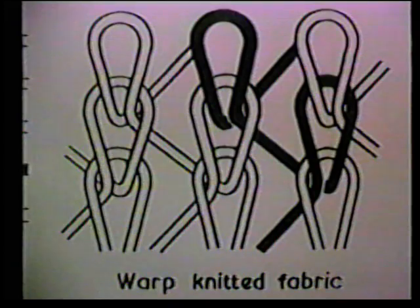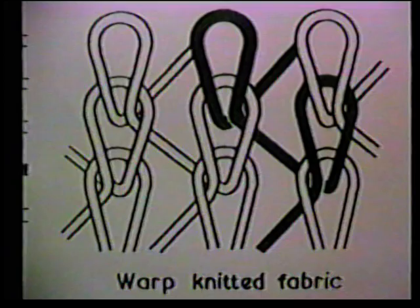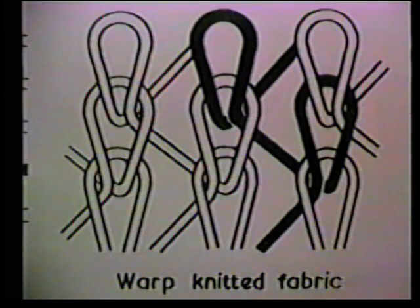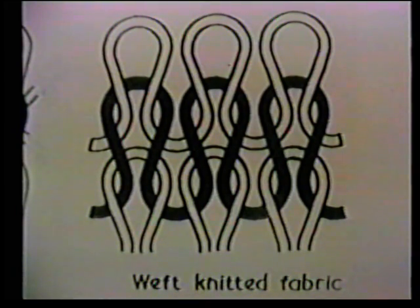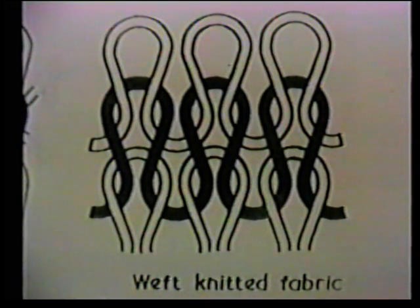If we look at loop drawings of the two separate systems of knitting, we see that warp knitting has loops which are formed in succession in the warp or vertical direction, by each needle being supplied with an individual yarn. Weft knitting has loops which are formed in succession horizontally in the weft direction, by all the needles with only one yarn needed.